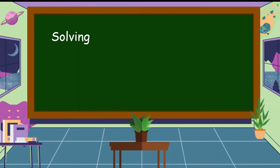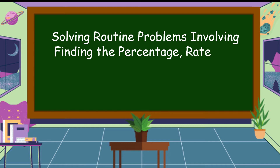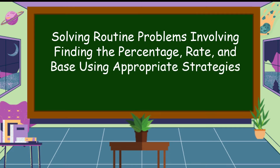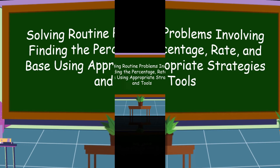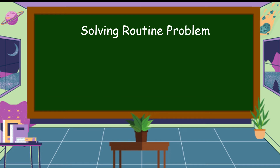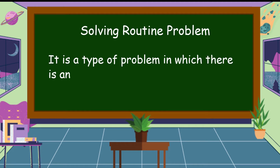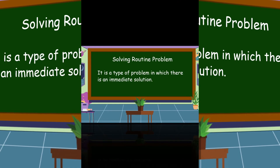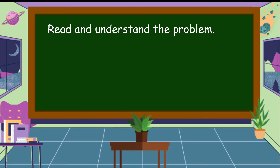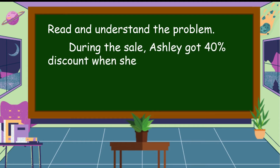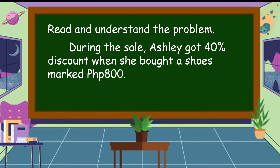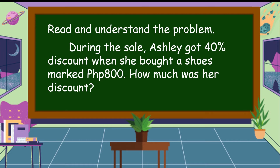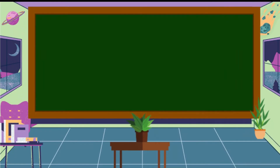Let's discuss solving routine problems involving finding the percentage, rate, and base using appropriate strategies and tools. When we say solving a routine problem, it is a type of problem in which there is an immediate solution. Read and understand the problem: During the sale, Ashley got a 40% discount when she bought a shoe marked 800 pesos. How much was her discount? Our problem is an example of a routine problem.